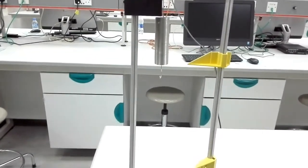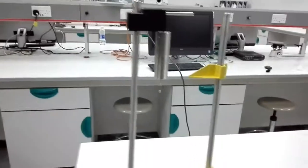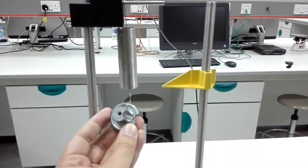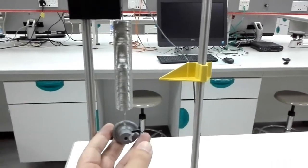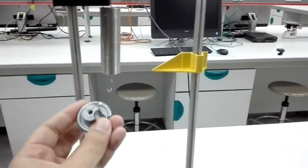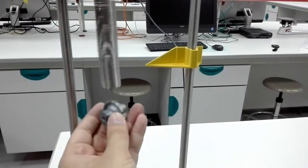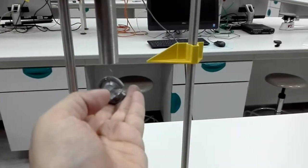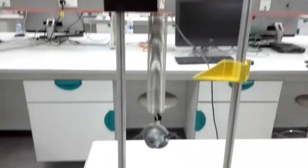There are two parts of this experiment. In the first part, you'll hang masses with the spring and measure the extension of the spring. Let's say this is the initial length of the spring, and then you hang a mass. So this is the new length. Let's say that the initial length is L0, the new length is L1, so L1 minus L0 is the extension of the spring.